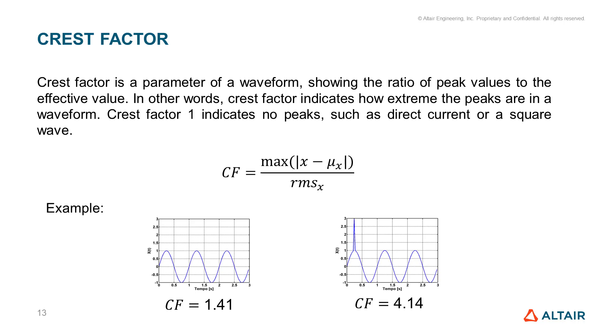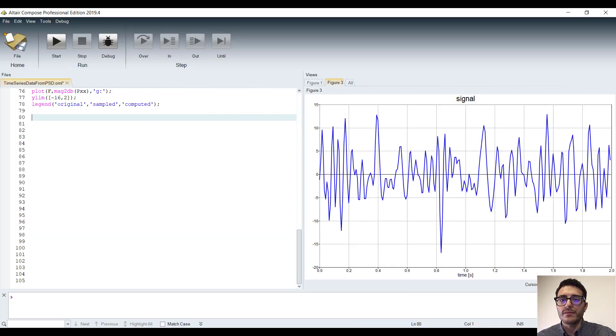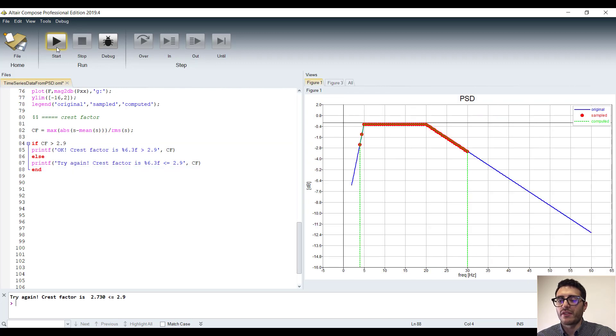We can easily implement it in Compose. So we just type the formula. Our selection criteria will be to have the crest factor greater than a certain value. And through the if statement we can verify if it is satisfied or not.